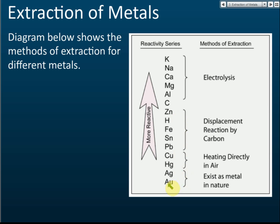Starting from the lowest, we can see that AU — gold — is at the bottom, along with silver. These two metals, silver and gold, exist as metals in nature, meaning we don't need to extract them. The others exist as compounds in nature, so we need to extract them from their compounds. But for gold and silver, no extraction is needed.